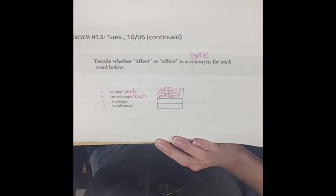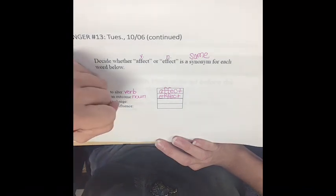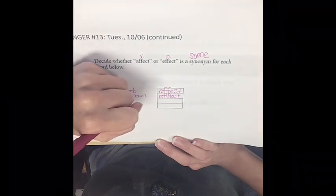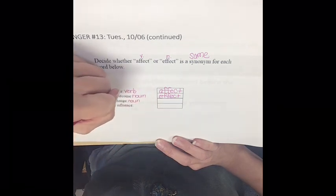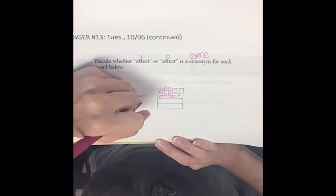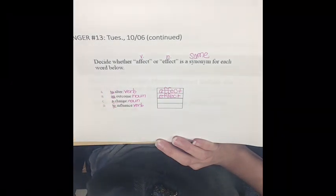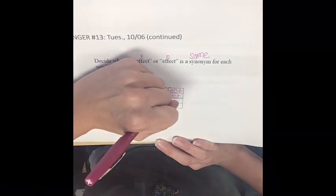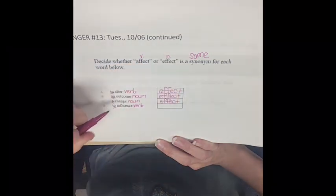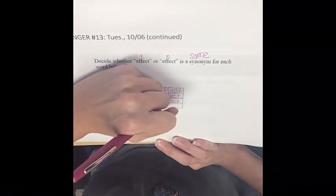Let's make our notes up here. A change — this is our key to E — we know those are going to be nouns. The word 'to alter,' 'to influence' — we know A and D are going to be verbs. So C, 'a change,' is going to be the noun — effect with an E. 'To influence,' our verb — affect with an A.